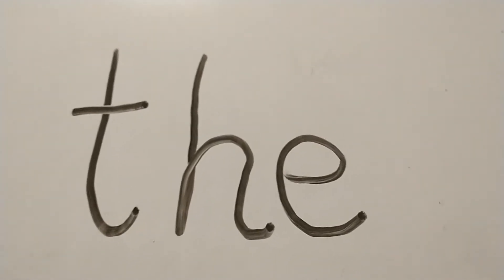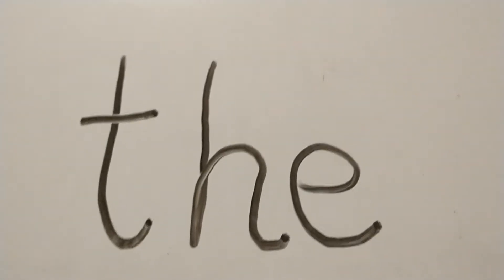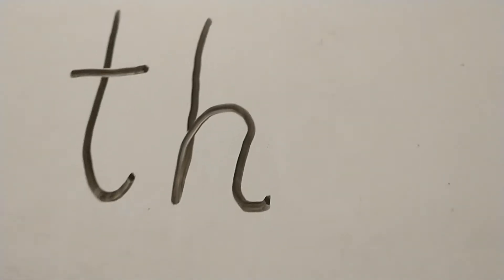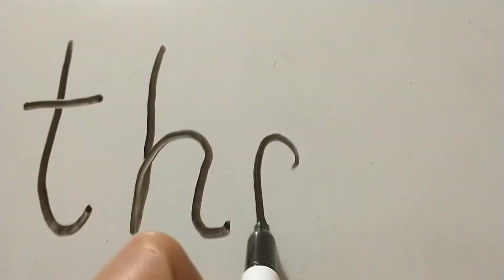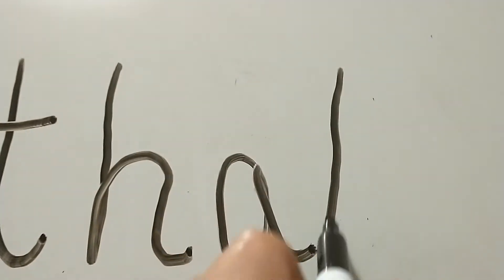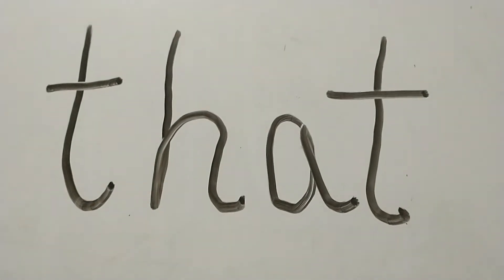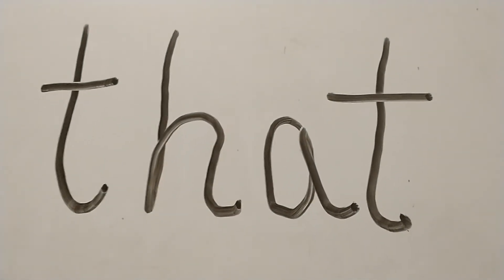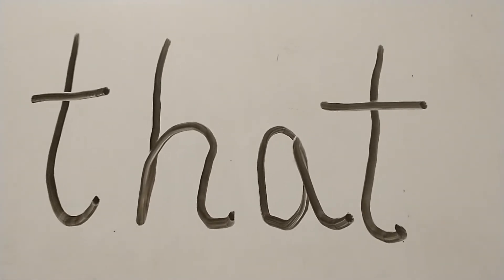Our next word — we're going to leave the TH in front and put an A and a T after it. So we get TH-AT: THAT. TH-AT, THAT.